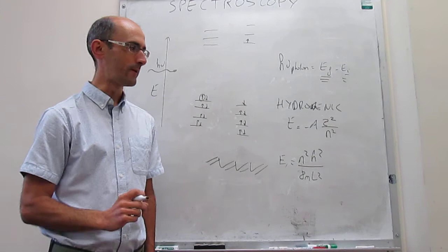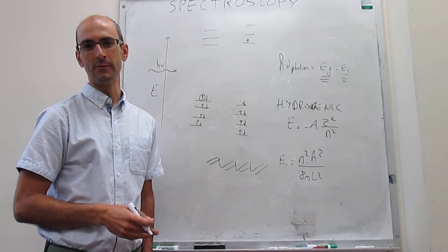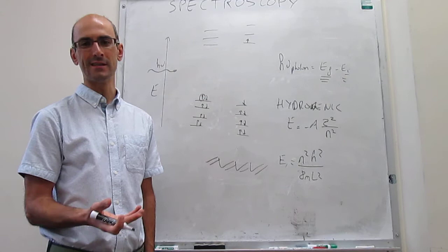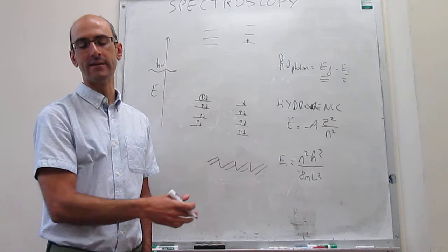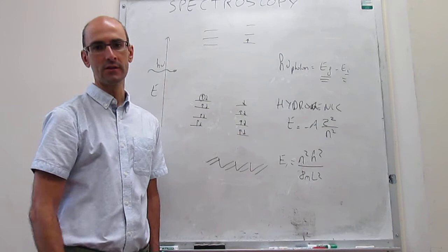But aside from hydrogenic atoms, polyenes, and particle in a 2D box systems, for molecules like CO, nitrogen, or proteins, we don't have easy energy expressions to quantitatively predict the wavelength of the photons.